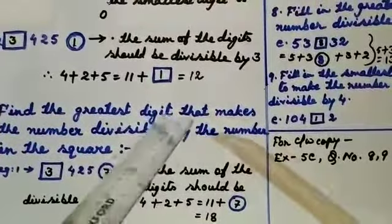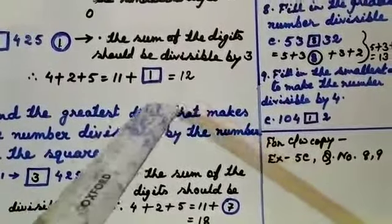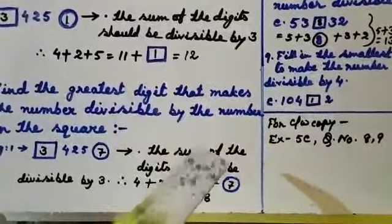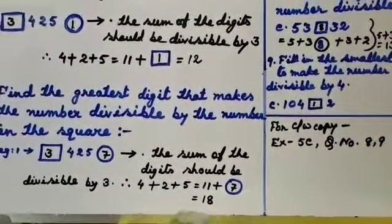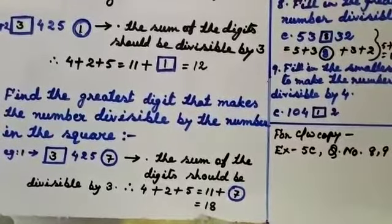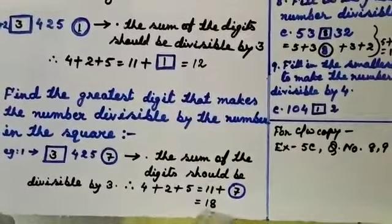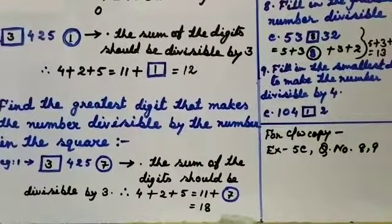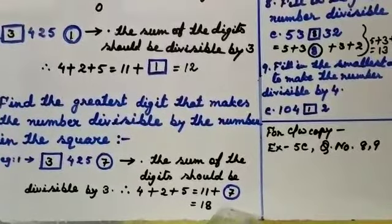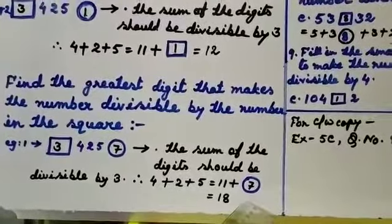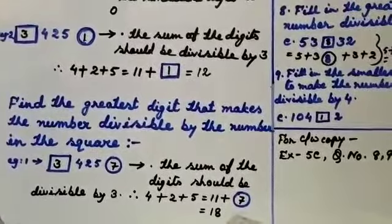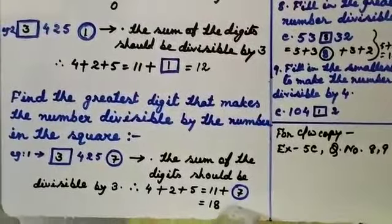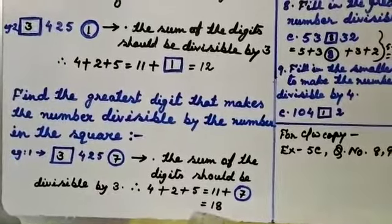For the smallest digit we used multiple 12, adding 1. The next multiples of 3 are 15, 18, and 21. Subtracting 11 from 18 gives 7. Subtracting 11 from 21 gives 10, which cannot be written as it is two digits. So the last valid single digit is 7, corresponding to multiple 18. The greatest digit is 7.